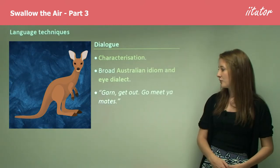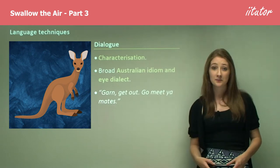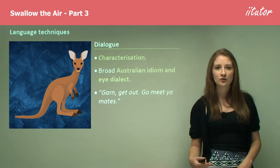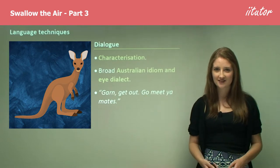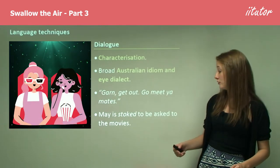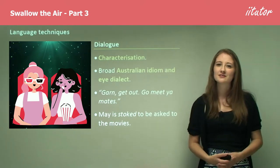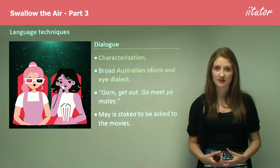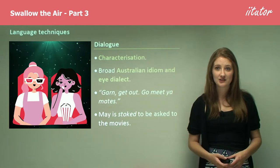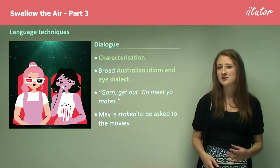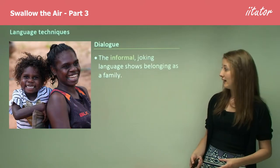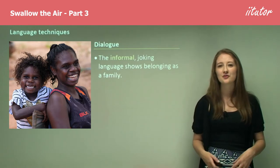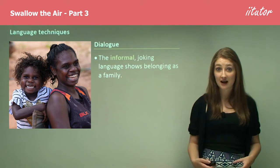Eye-dialect is the concept where you write words as you would say them. For example: 'Garn, get out, go meet your mates.' It's writing down in slang — not using correct spelling — but really expressing that accent and culture through the way words are presented. You also get the idea that Mae is 'stoked' to be asked to the movies. This informal joking language shows belonging as a family, demonstrating belonging through the way they talk and interact through dialogue.